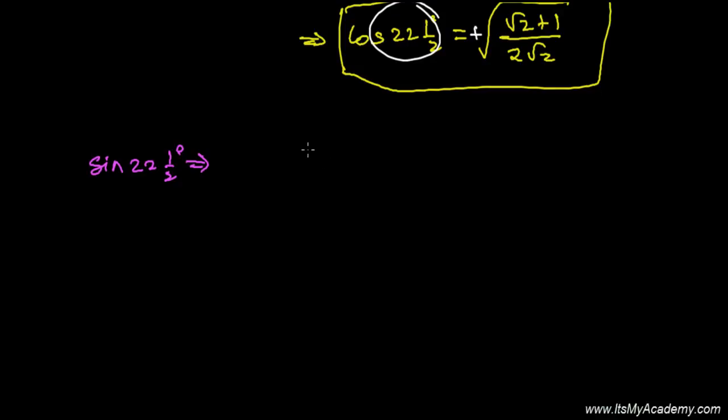1 minus 2 sine squared A/2 is the formula of cosine A. So from here, we can say that 1 minus cos A equals 2 sine squared A/2.